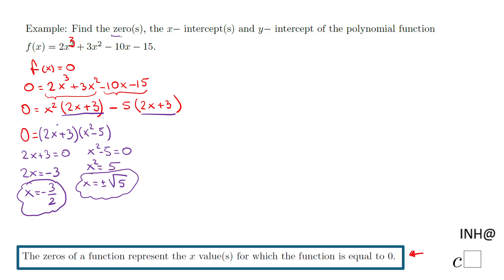These are the zeros. But what about the x-intercepts? The x-intercepts are kind of the same thing as the zeros. What I mean by that is the x-intercepts are ordered pairs: (-3/2, 0), (√5, 0), and (-√5, 0). These are the x-intercepts. You notice whenever you find the zeros, you have the x-intercepts also.